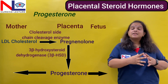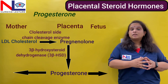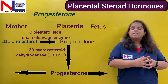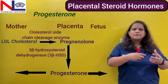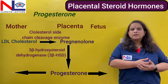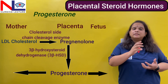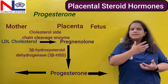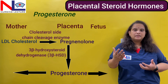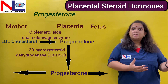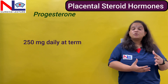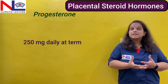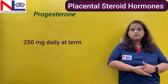The placenta synthesizes progesterone from eight weeks of gestation onward, before which the corpus luteum synthesizes this hormone. The placenta then takes over this function from the corpus luteum and synthesizes progesterone throughout pregnancy. By reaching near term it synthesizes around 250 mg daily. Thus, progesterone is synthesized by the placenta using maternal sources.